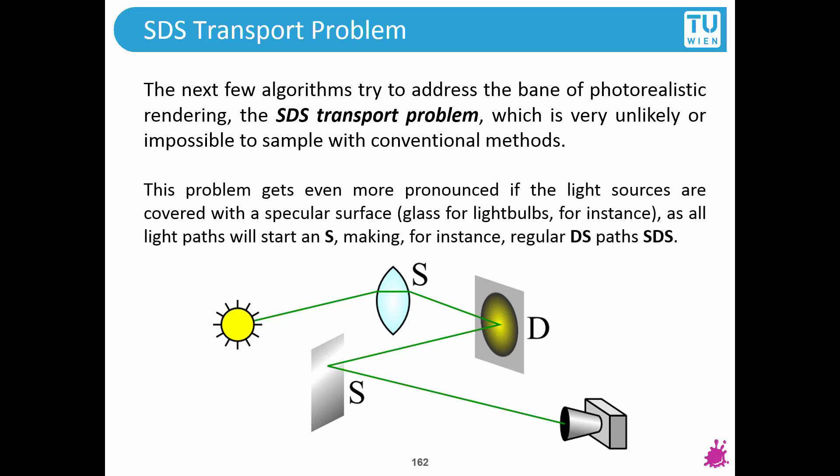And this is a problem that you can encounter very often, because imagine that if you have a light source that is covered by a specular surface, so for instance a glass light bulb, then even if you have a regular DS path, so one diffuse and one specular bounce, then you add one more S, because all the light that is exiting the light source is going to hit the cover, the glass part of the light bulb, and therefore every DS is going to be SDS.